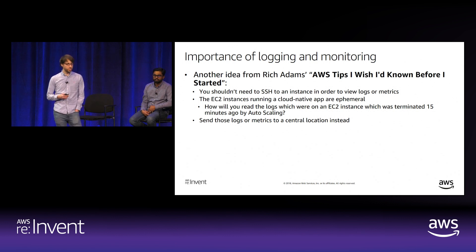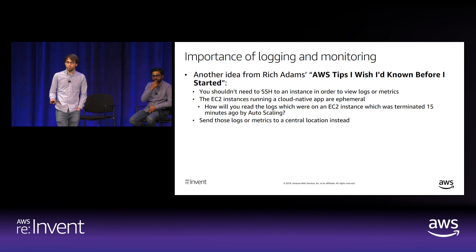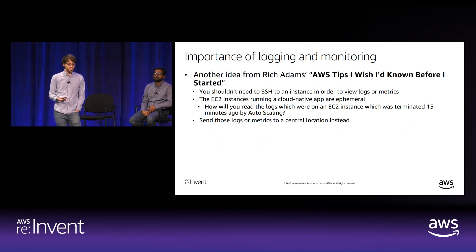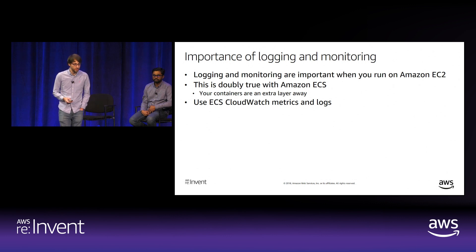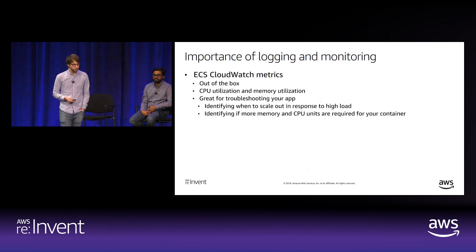SSHing to view logs or metrics doesn't scale, especially when EC2 instances in a cloud-native microservice are ephemeral. How do you read logs on an EC2 instance that was terminated 15 minutes ago by autoscaling? The solution is to send logs and metrics to a central location. Amazon ECS supports Amazon CloudWatch metrics out of the box, letting you see CPU and memory utilization per container—useful for troubleshooting and identifying under-provisioned containers.